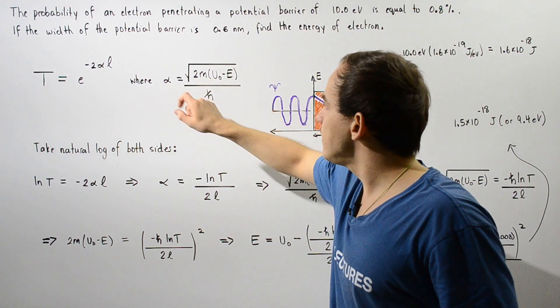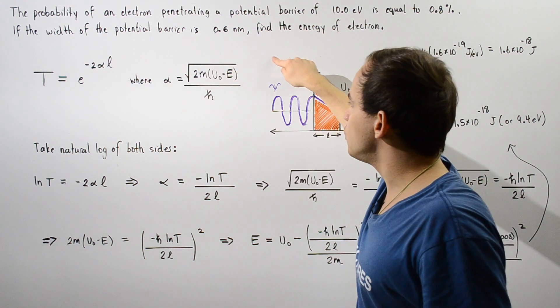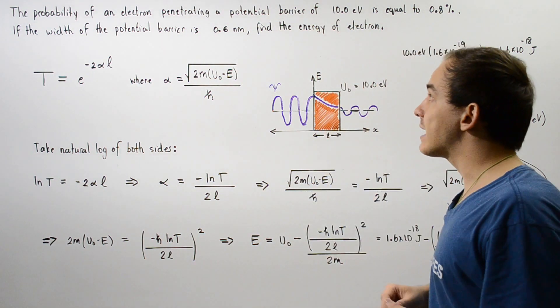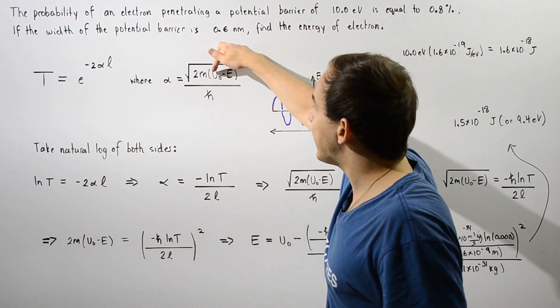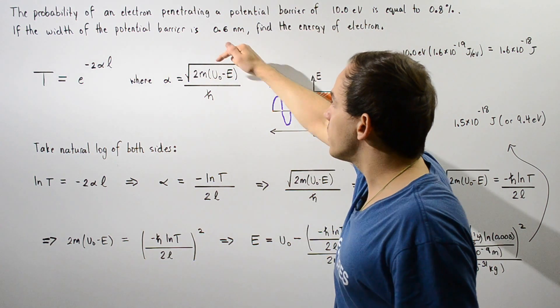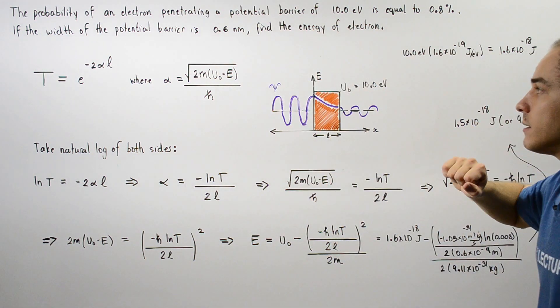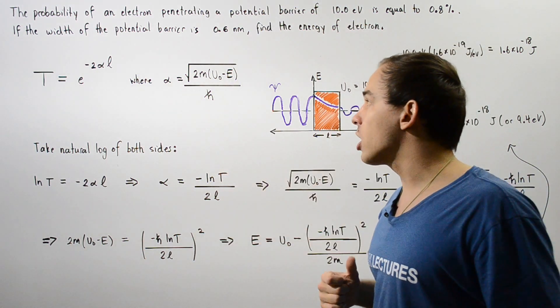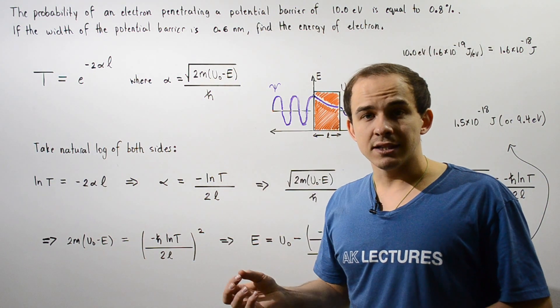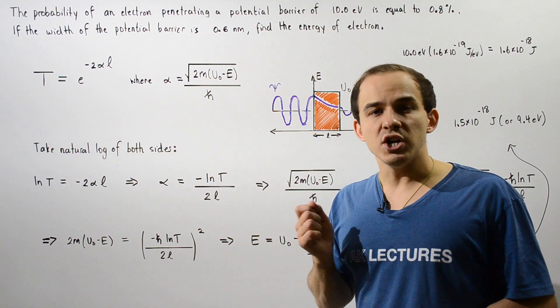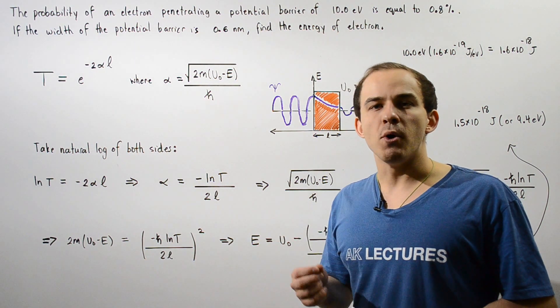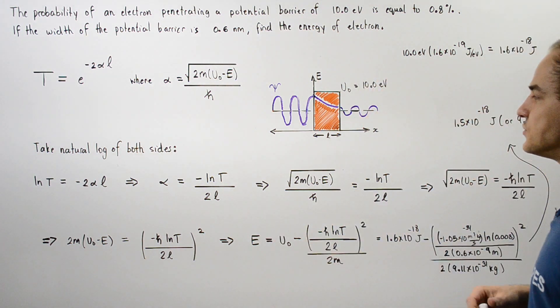Alpha is equal to the square root of 2 multiplied by M where M is the mass of that electron multiplied by U0 minus E where U0 is the height of our barrier and E is what we're looking for. And H bar is simply our constant. It's equal to 1.05 times 10 to negative 34 kilograms multiplied by meter squared divided by seconds.